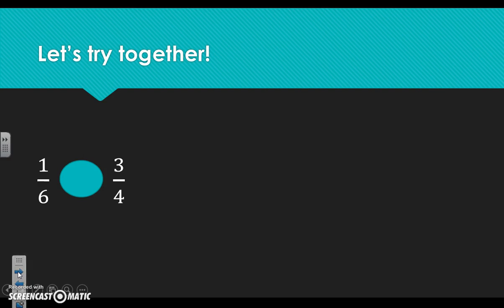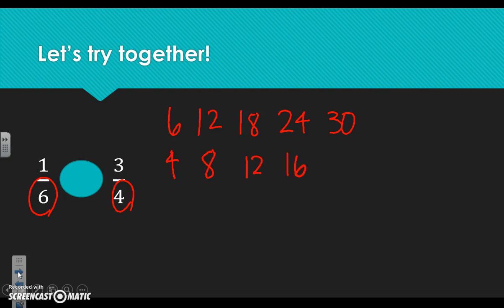Let's try another one. We have one sixth and three fourths. Again, we need to find a common denominator, so let's list our multiples. Starting with six: six, twelve, eighteen, twenty-four, thirty. Now let's look at four and see if we can find a multiple it shares with six: four, eight, twelve, sixteen, twenty. Before we go any further, let's stop and look — we have twelve and twelve.